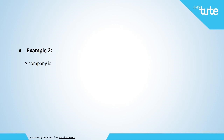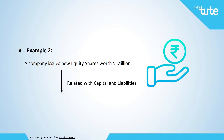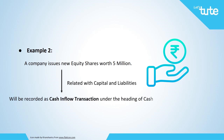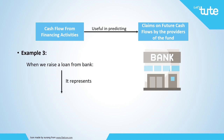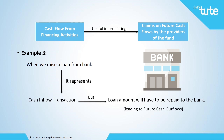A company issuing new equity shares worth 5 million is an example of a cash inflow transaction directly related to the capital and liability side of the balance sheet. So this transaction will be recorded as a cash inflow under the heading of cash flow from financing activities. Cash flow from financing activities is useful in predicting claims on future cash flows by the providers of funds — both capital and borrowings. For example, when we raise a loan from the bank, it represents a cash inflow transaction, but it also indicates that the loan amount will have to be repaid later, resulting in an outflow transaction in future.